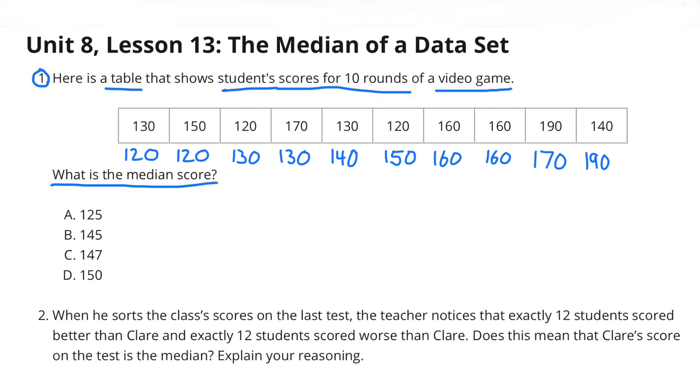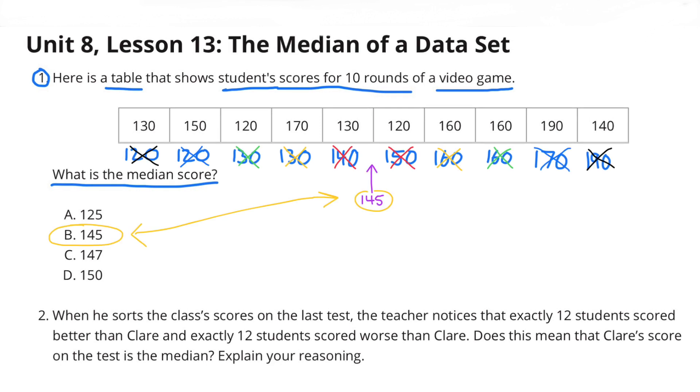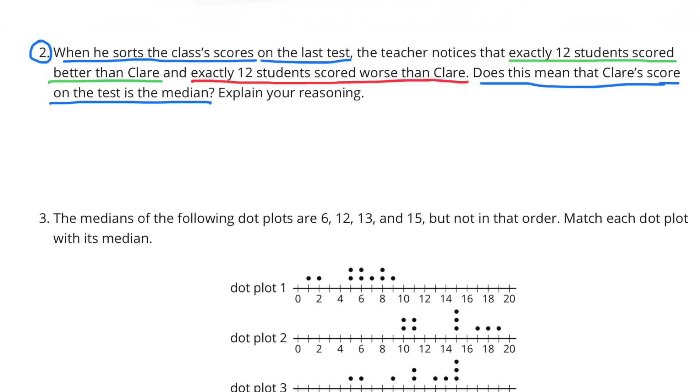And the middle value is 145, so the median score is 145. Number two: When he sorts the class's scores on the last test, the teacher notices that exactly 12 students scored better than Claire and exactly 12 students scored worse than Claire. Does this mean that Claire's score on the test is the median? Explain your reasoning.